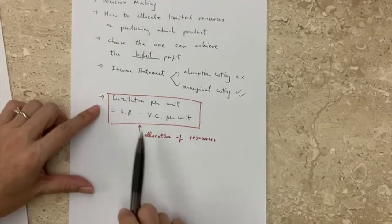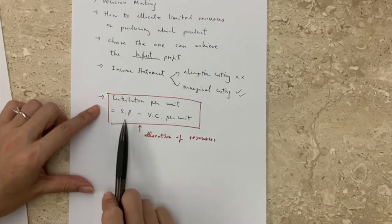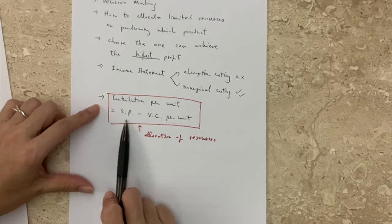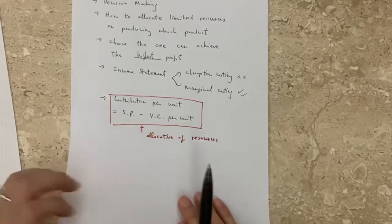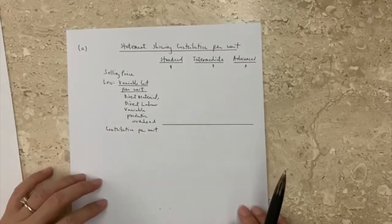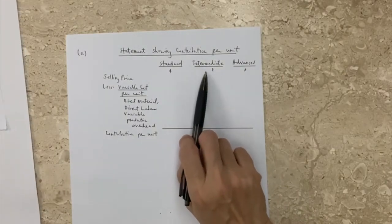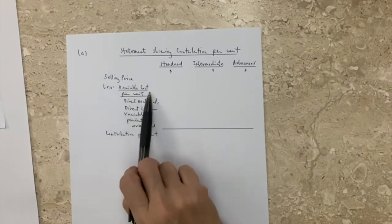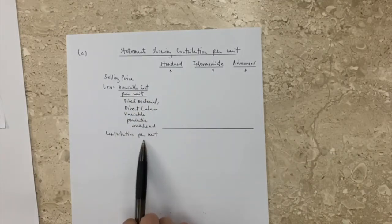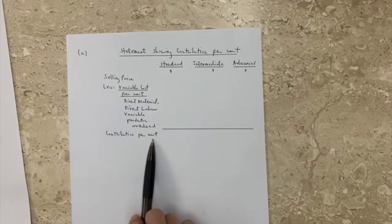Under the marginal costing system, how do we allocate limited resources? We focus on contribution per unit. Contribution per unit is equal to selling price per unit minus all the variable costs per unit. Here is my statement showing contribution per unit for each model — standard, intermediate, and advanced. We start with selling price and minus all the variable costs to get contribution per unit. This is how we make our ranking and priority to allocate limited resources.